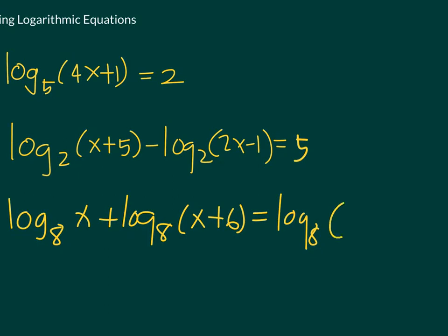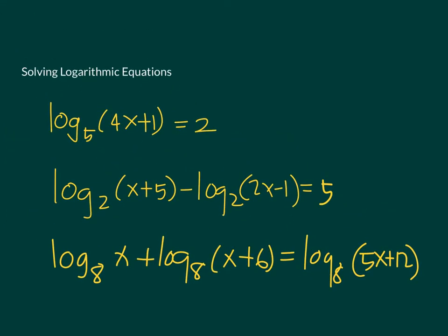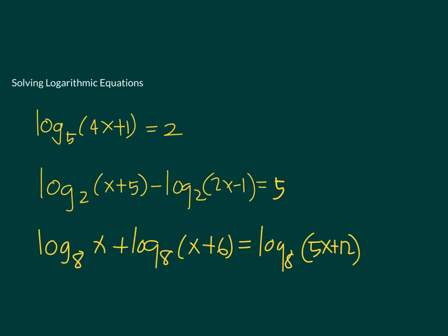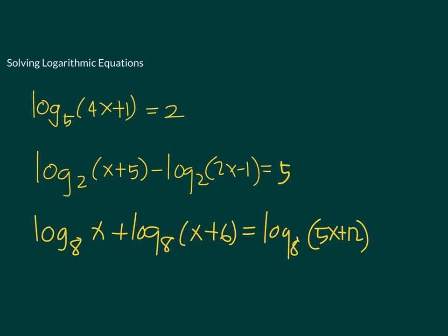In the first one, we have a log on the left side and a number on the other side. The second has two logarithms with a difference on the left side and a number on the other side. The third has a sum of logarithms equal to another logarithm. I'll solve these equations and show you how to approach different types of logarithmic equations, starting with the first one.